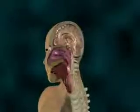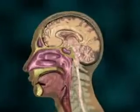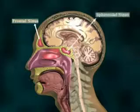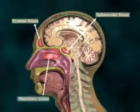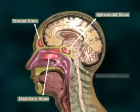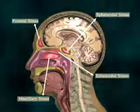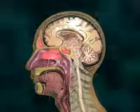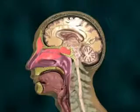Paranasal sinuses comprise four paired cavities designated frontal, sphenoidal, maxillary, and ethmoidal sinuses. These sinuses are located in the bones of the face and lined by a mucus membrane continuous with that of the nasal cavity.